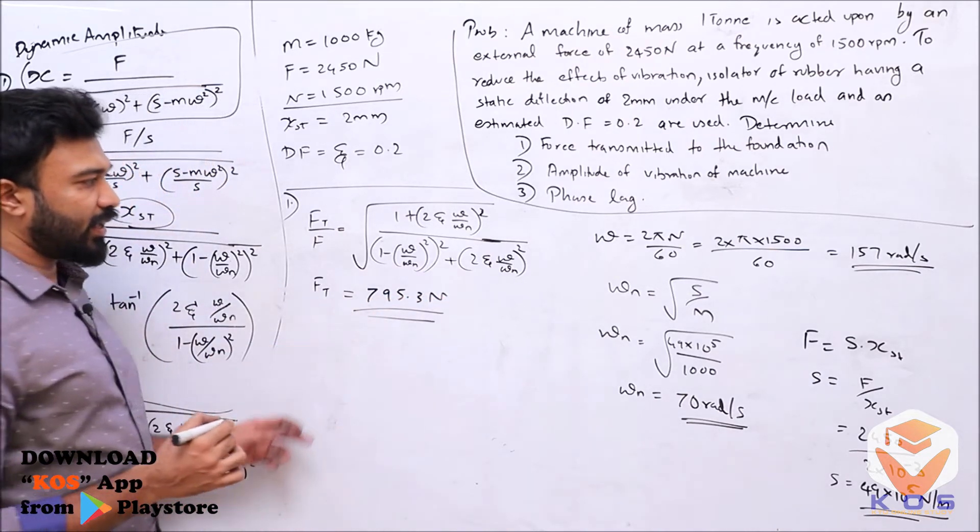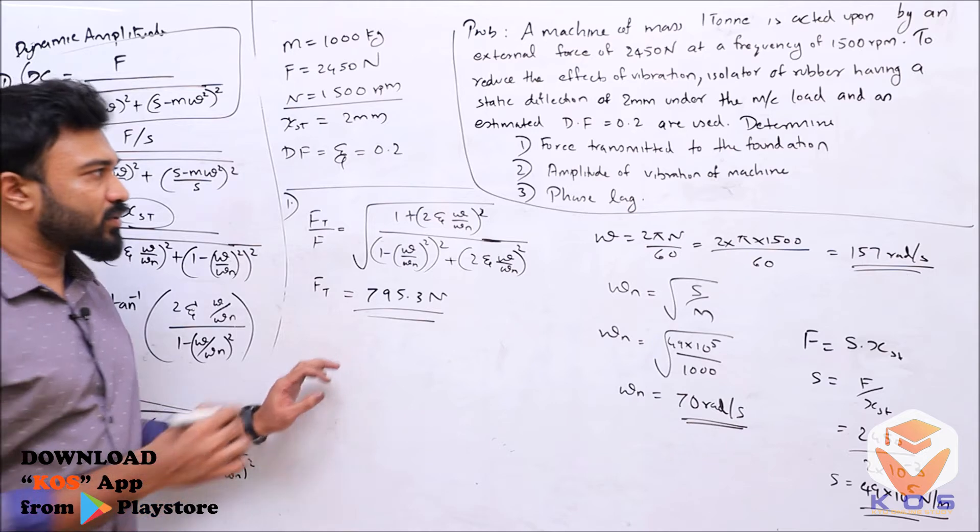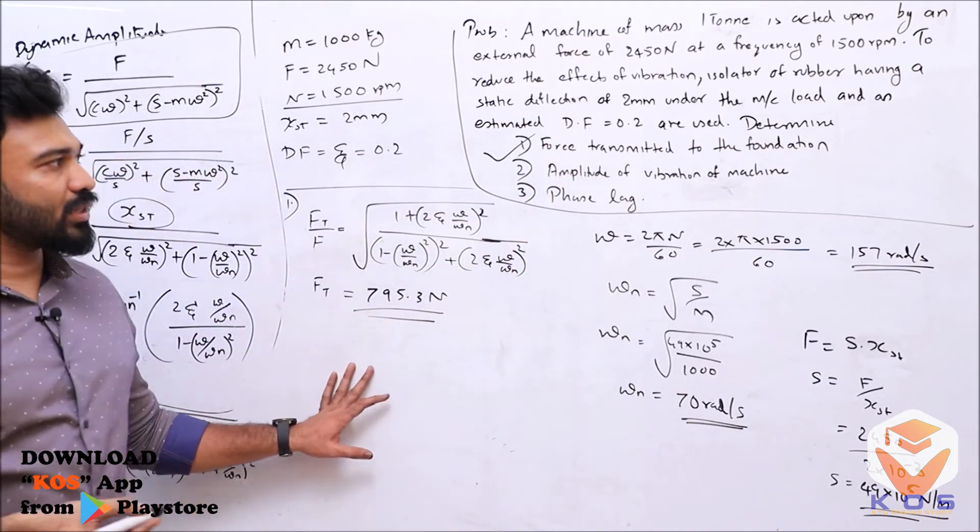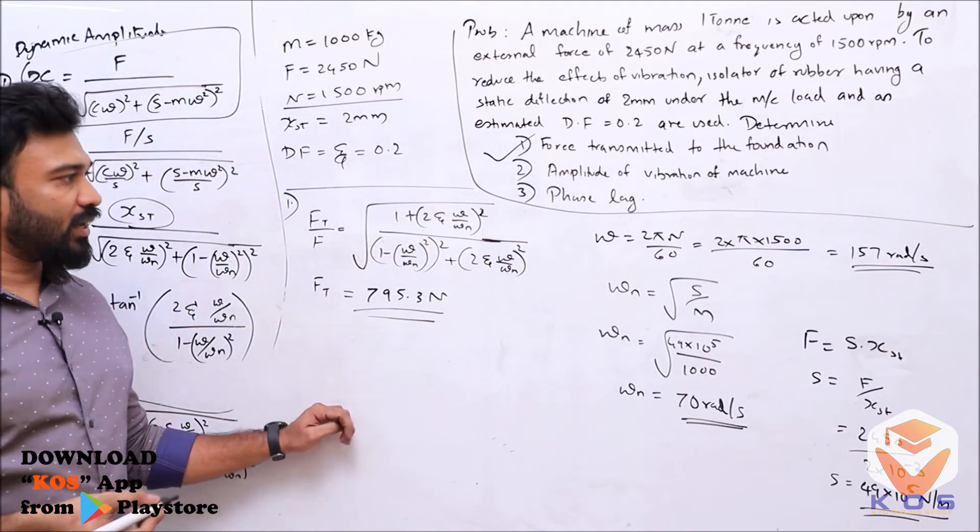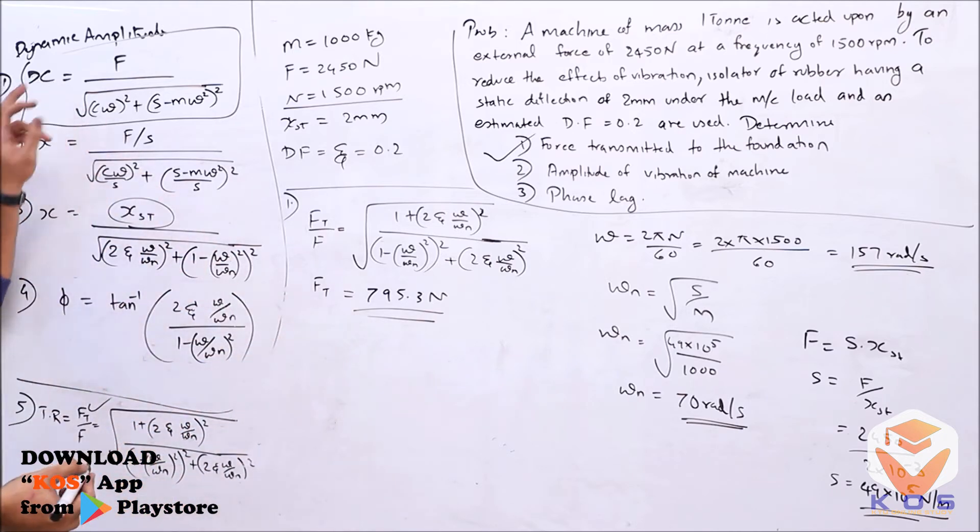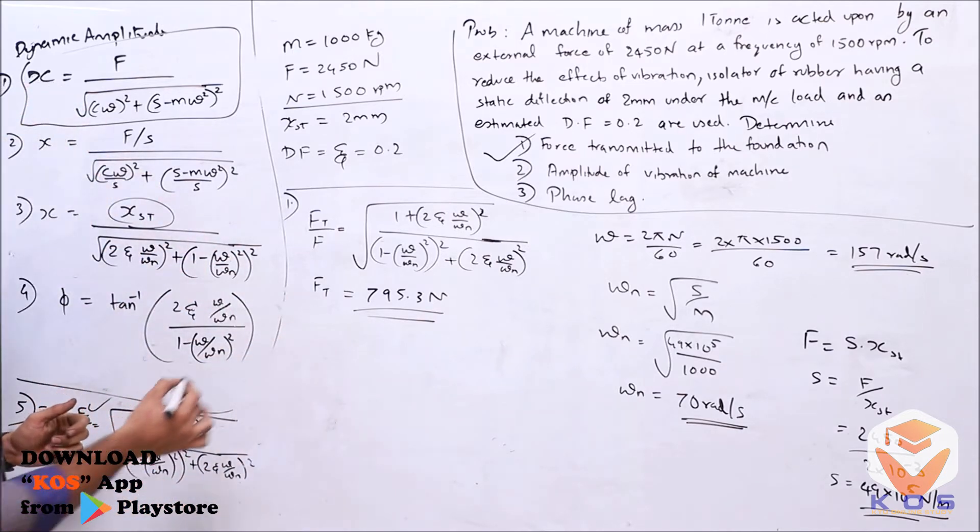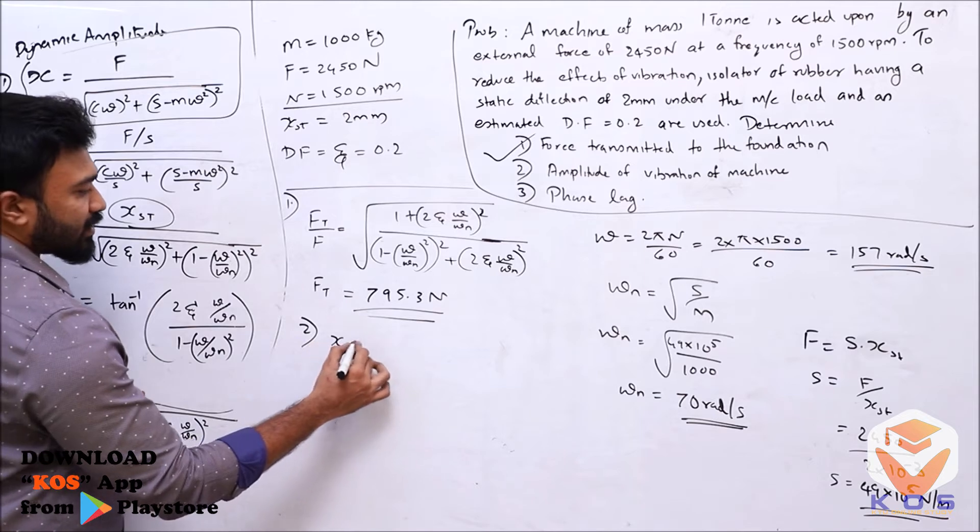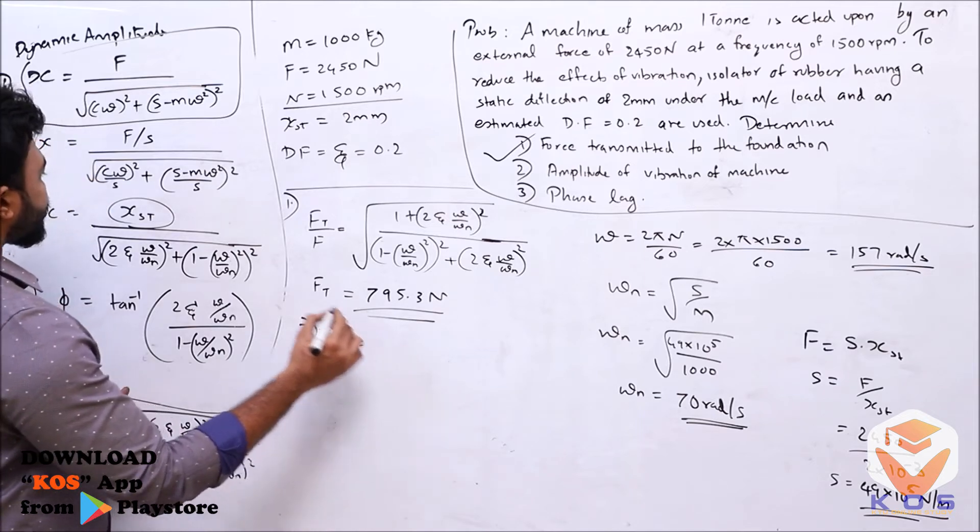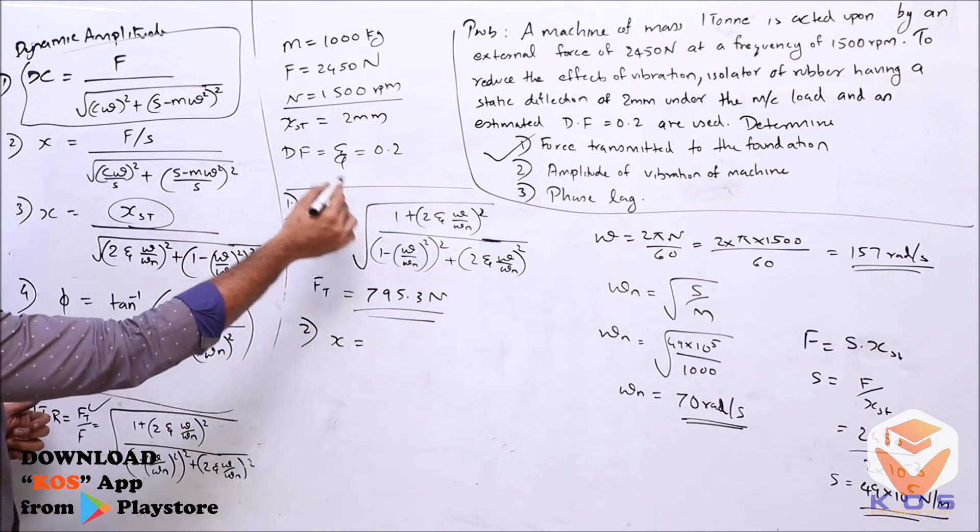Now we have the answer. Next, we're looking at amplitude of vibration of machine. The amplitude is the dynamic amplitude. So x in the equation x equals... we are now explaining this equation.